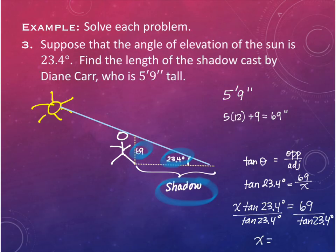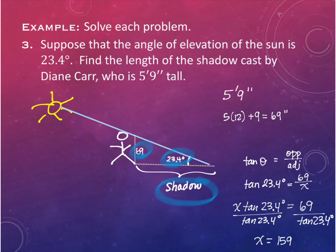The answer in inches - since we converted to inches - is 159 inches. That's the length of the shadow, rounding to a whole number since no decimal precision was specified. If done in feet, the answer would be 13.29 feet.